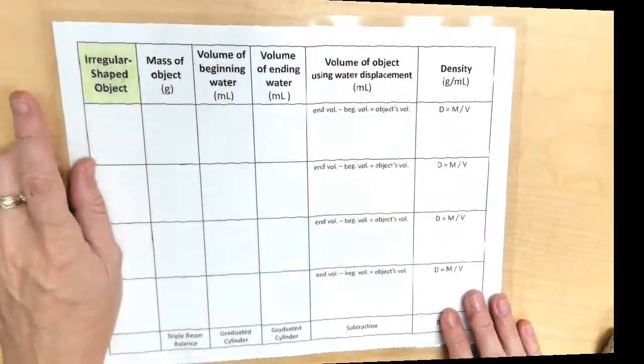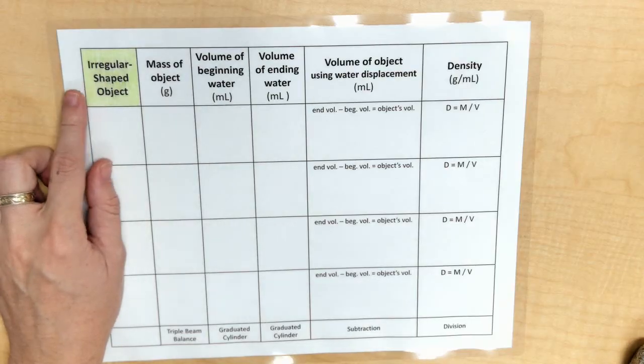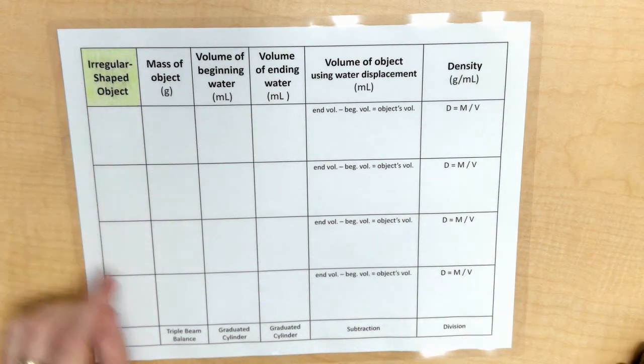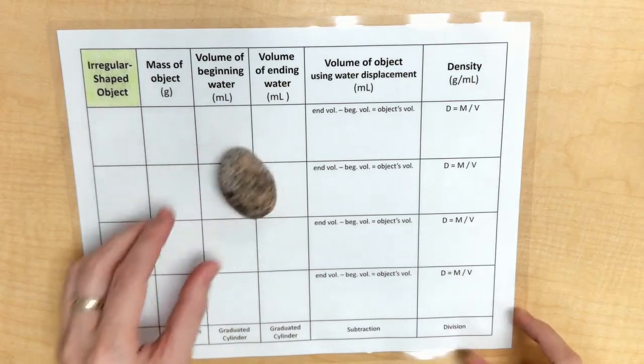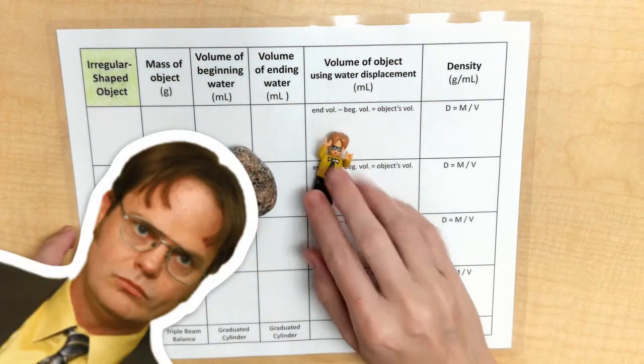Hey guys, it's Ms. Bell here again in the Science Lab and I'm here to talk to you about density. So we're going to take some measurements for our irregular shaped objects and the two I'm going to be using today are my really pretty rock and my Lego piece. This is Dwight from the office.